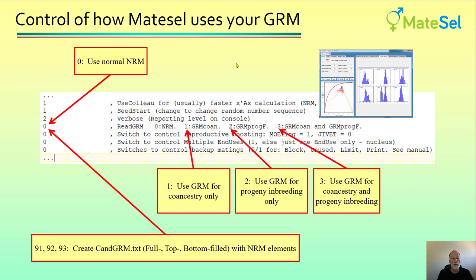Now we look at how you control your use of the GRM in MateCell. It's this one line in MateCell Any — an integer for the parameter readGRM. The default zero is to use the NRM. Then one, two, and three are for using your GRM for co-ancestry calculations — that's for genetic diversity. You can use the GRM for calculating progeny inbreeding, or with a value of three, use the GRM to do both: manage co-ancestry and report on inbreeding values.